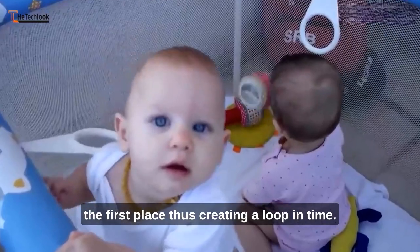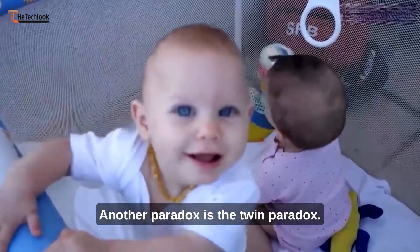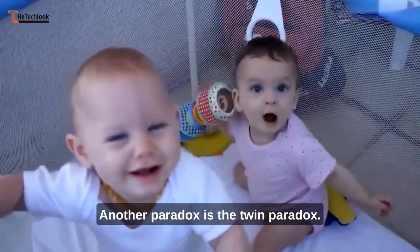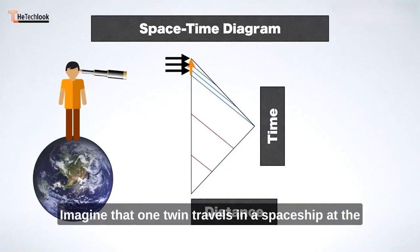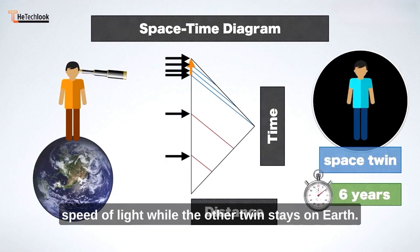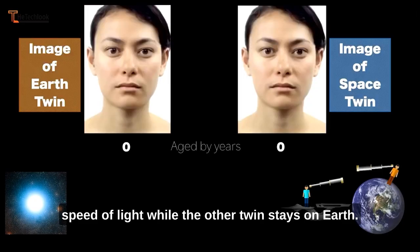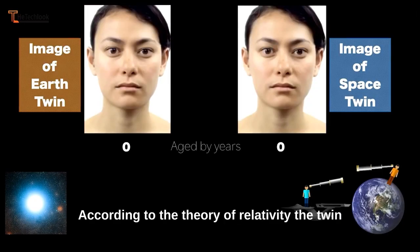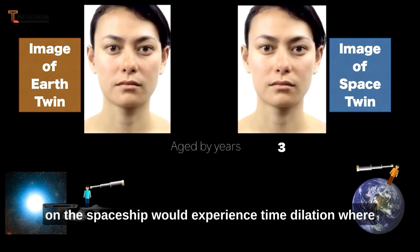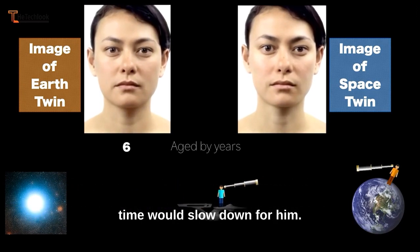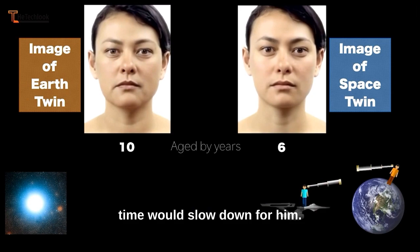Another paradox is the twin paradox. Imagine that one twin travels in a spaceship at the speed of light while the other twin stays on Earth. According to the theory of relativity, the twin on the spaceship would experience time dilation, where time would slow down for him.